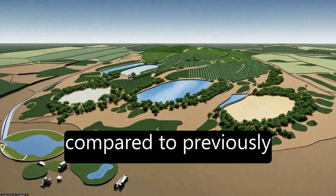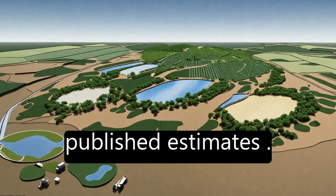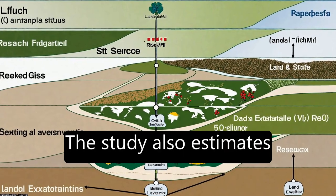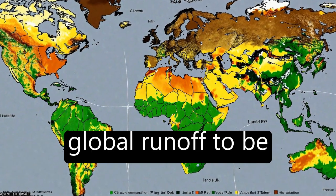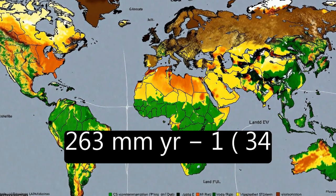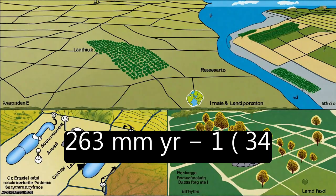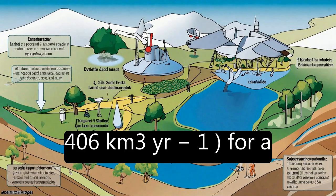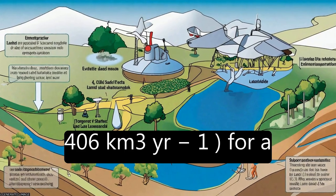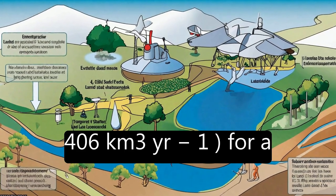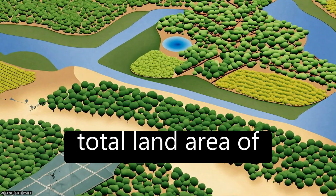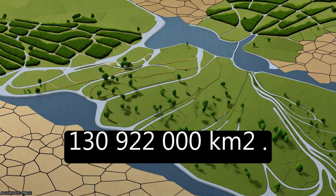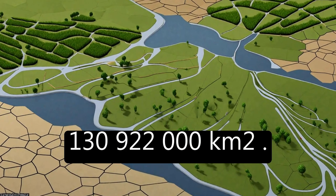This estimate is relatively low compared to previously published figures. The study also estimates global runoff to be 263 mm/year (34,406 km³/year) for a total land area of 130,922,000 square kilometers.